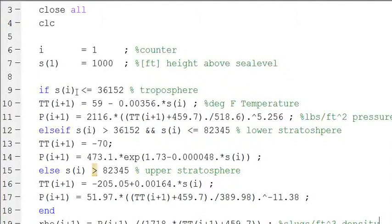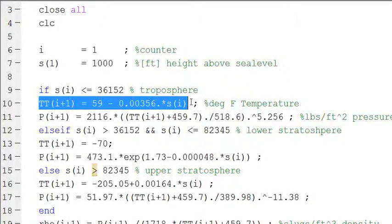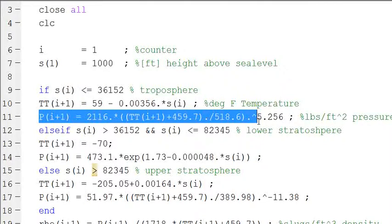I'm going to say if the height above sea level, s(i), so s(1), is less than or equal to thirty-six thousand feet and change, we're in the troposphere, and we're going to calculate our temperature in terms of degrees Fahrenheit using this equation, and the pressure in terms of pounds per foot squared in terms of this equation.